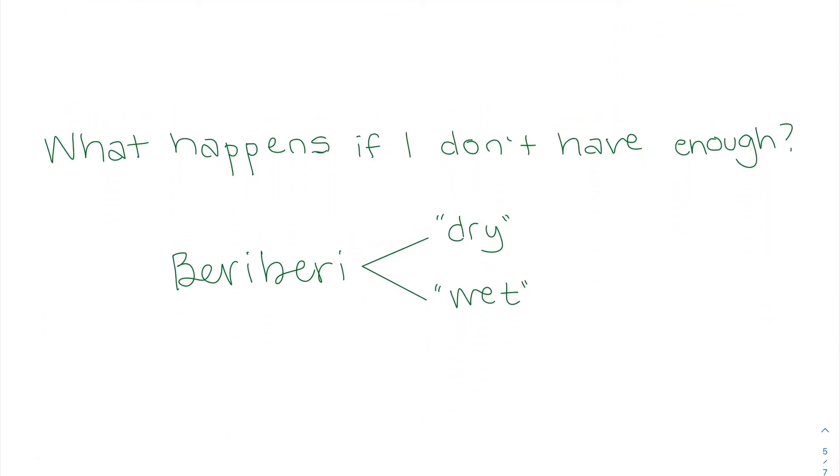So beriberi is the deficiency disease and it affects our nervous system and our cardiovascular system. So in infants, this can be seen as heart failure or cyanosis. And then in adults, we can see things like mental confusion, anorexia, muscle weakness, ataxia, eye paralysis, tachycardia, enlarged heart. So many things. We need thiamin.